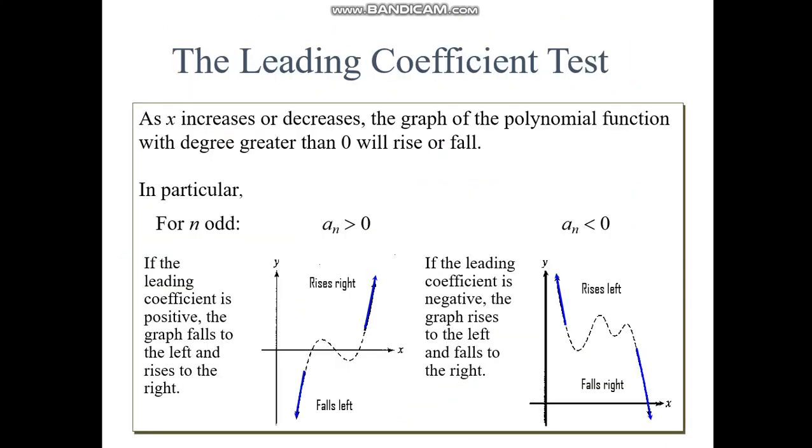So let's talk about polynomials. We have something we call the leading coefficient test, which is a lot like what we just talked about with lines. And there's this kind of general statement at the beginning. As x increases or decreases, the graph is also going to go up or down, unless we have to have a degree greater than zero. That constant function, it doesn't work. But with anything else.